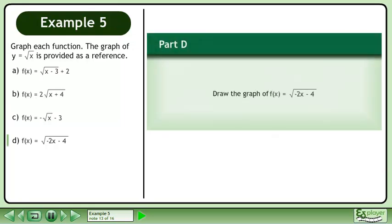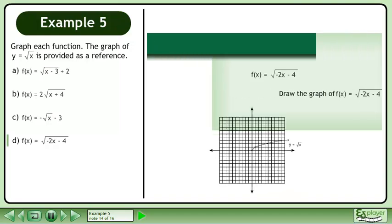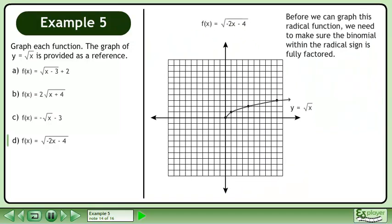In Part D, draw the graph of f equals the square root of negative 2x minus 4. Before we can graph this radical function, we need to make sure the binomial within the radical sign is fully factored. Factor out negative 2 to get f equals the square root of negative 2 times x plus 2.